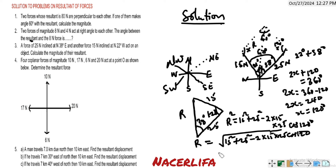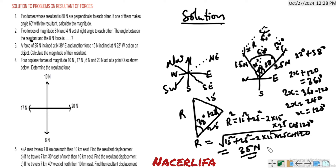Resolving this: R = √(15² + 25² − 2 × 15 × 25 × cos 120°) = 35 Newton. So the magnitude of the resultant for these two forces acting in different directions is 35 Newton.